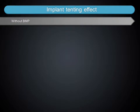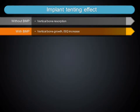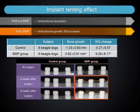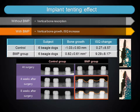Titanium tenting screws have been successfully used with bone grafts for lateral and vertical augmentation. To evaluate the effect of RHBMP2 on bone regeneration around titanium tenting screws and dental implants, dental implants coated with RHBMP2 solution were placed with a 2.5 mm height microthread portion exposed from 6 dog mandibular posterior sites. Primary closure was performed with an advanced flap. X-ray and histological findings at 4 and 8 weeks showed that RHBMP2-coated implants had a vertical bone change of +0.82 ± 0.61 mm compared to -1.03 ± 0.83 mm for uncoated implants.